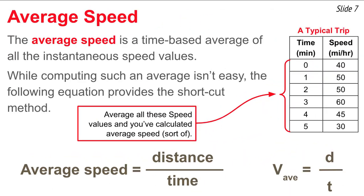If I could take those values of speeds at 0, 1, 2, 3, 4, and 5 minutes and average all of those — even taking more data points and averaging all those data points — what I'm doing is finding the average of all those instantaneous speed values: I'm finding the average speed. The average speed is like a time-based average of all the instantaneous speed values taken over the course of motion. That would be a very difficult thing to do, but fortunately there's a shortcut.